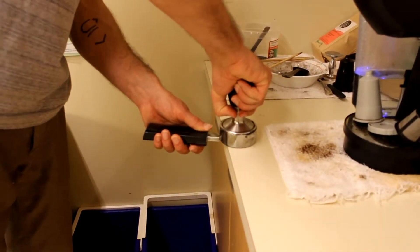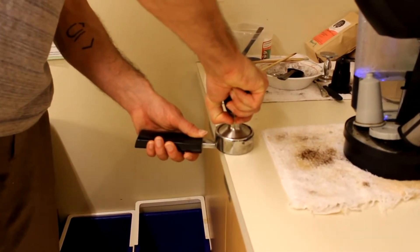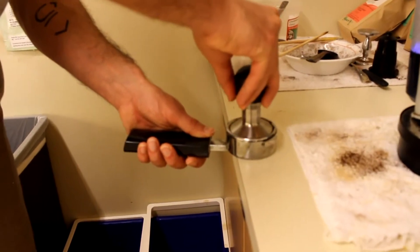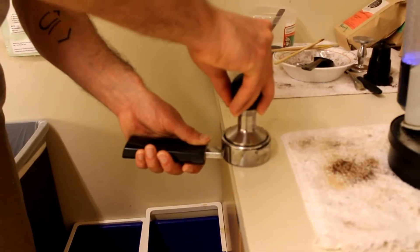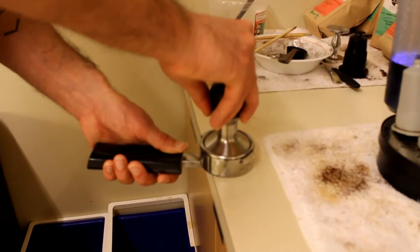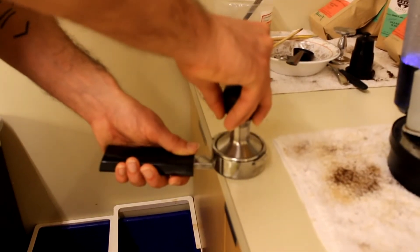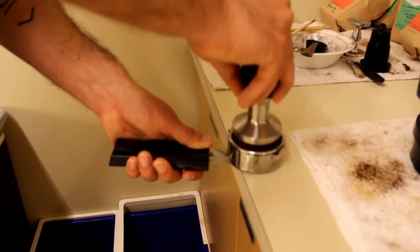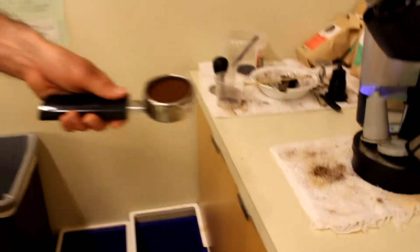Depending on the grind, the grind will dictate how hard you really want to tamp this. You want to tamp so that you have some room between the coffee surface and the shower screen on the espresso machine, on the group head.